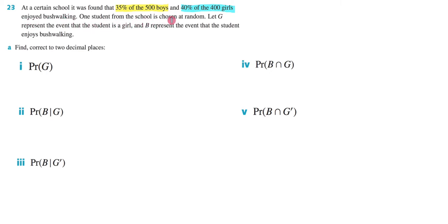One student from the school is chosen at random. Let G represent the event that the student is a girl, and B represent the event that the student enjoys bushwalking. Find correct to two decimal places, and then all of these.